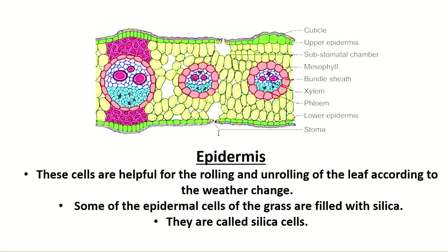These buliform cells are helpful in the rolling and unrolling of leaves during weather changes — we have already discussed the phenomenon of rolling and unrolling of the leaf in young leaves; check the description box to find that link. Some epidermal cells of grass are also filled with a component called silica, and those cells are termed silica cells.